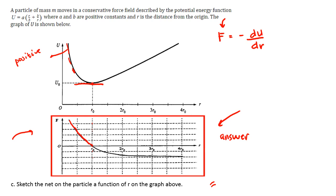Beyond the minimum potential energy point, the slope becomes positive and increasing, so the force becomes negative. The force continues to be negative until around 2R where the potential energy starts increasing linearly. At that point the slope no longer changes, and therefore the force remains steady at that particular location.